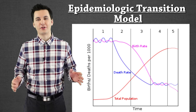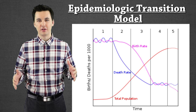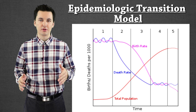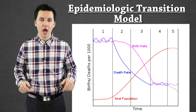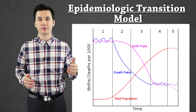Welcome back geographers. Today we're talking about the Epidemiologic Transition Model. This video is going to be covering the different stages of it, how it can connect to real life, and also how this model connects to the demographic transition model. So make sure you take out the guided notes — you can find them in the description below — as we explore death and all the different ways that people die throughout the evolution of society.